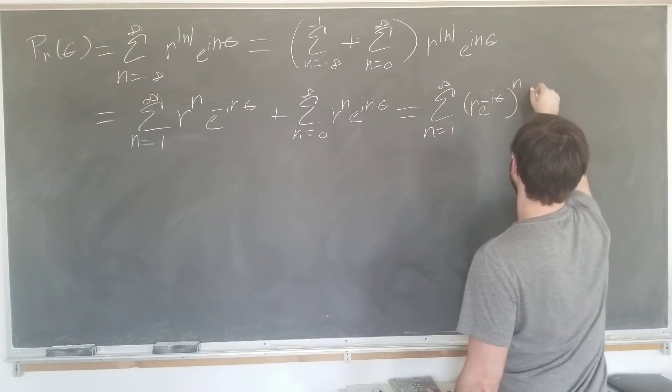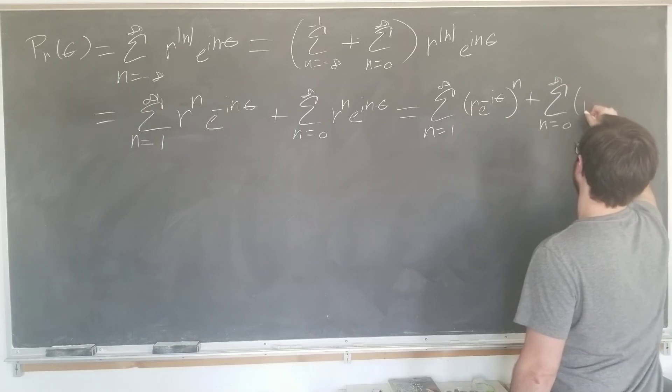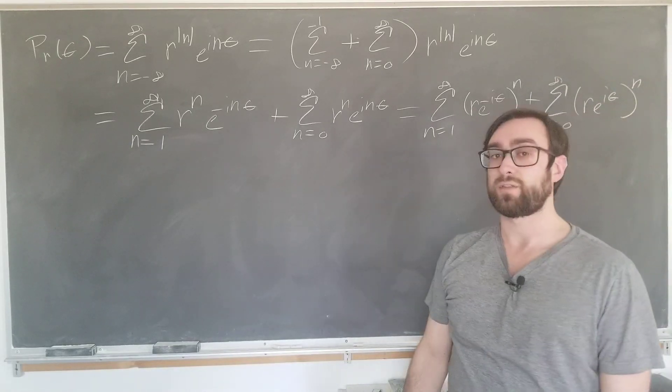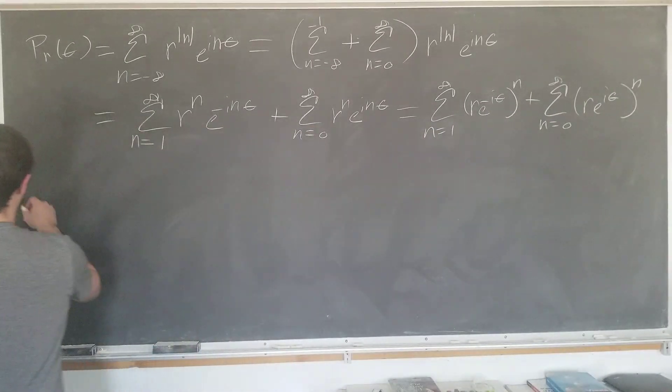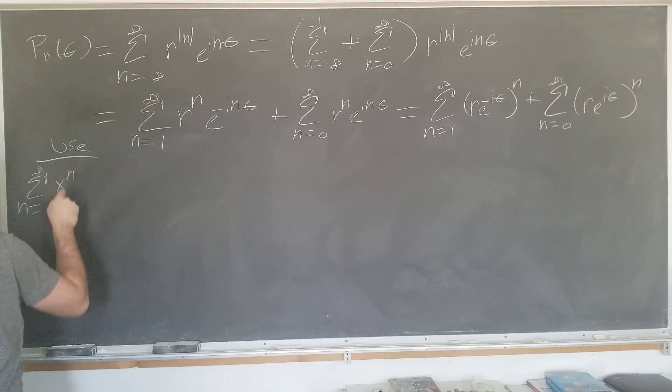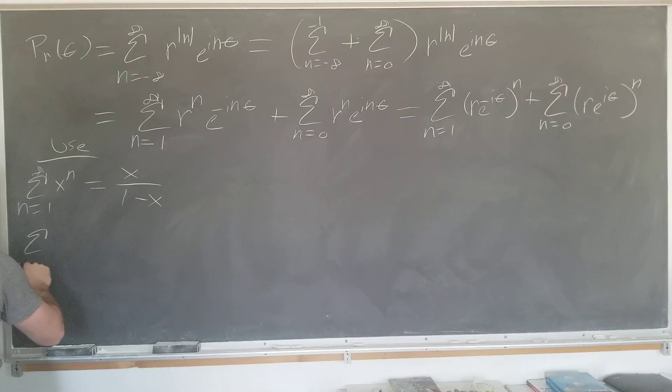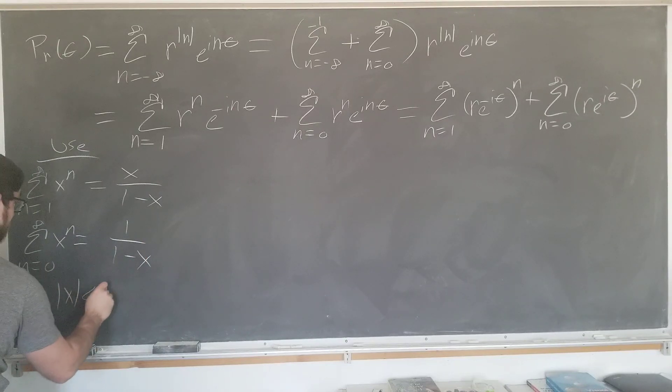The second sum as n goes from 0 to infinity of r to the n. Now we can use the geometric series formulae, which we've actually discussed several times on this channel. We're going to be using the fact that if we start n from 1 to infinity of x to the n, it's going to be equal to x over 1 minus x. Start it at 0, it's going to be 1 over 1 minus x. These are both valid for absolute value of x less than 1, of course.